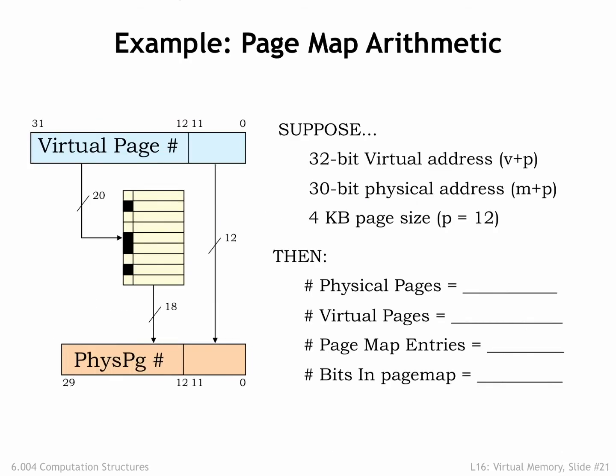For example, suppose our system supported a 32-bit virtual address, a 30-bit physical address, and a 4KB page size. So P equals 12, V equals 32 minus 12, or 20, and M equals 30 minus 12, or 18. There are 2 to the M physical pages, which is 2 to the 18th in our example. There are 2 to the V virtual pages, which is 2 to the 20th in our example. And since there is one entry in the page map for each virtual page, there are 2 to the 20th page map entries.